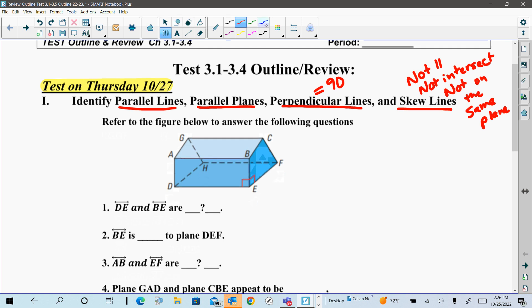Number one is referring to line DE, which is this horizontal line here, compared to line BE, which is here. And if you see right here, there is a box. So that means that these lines are perpendicular—they intersect at 90 degrees. This is a symbol for perpendicular instead of writing out the word.